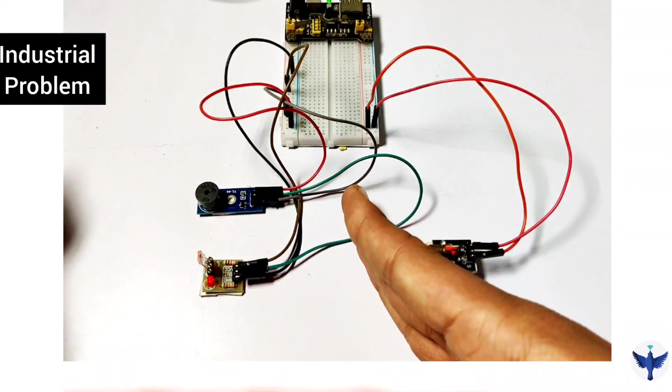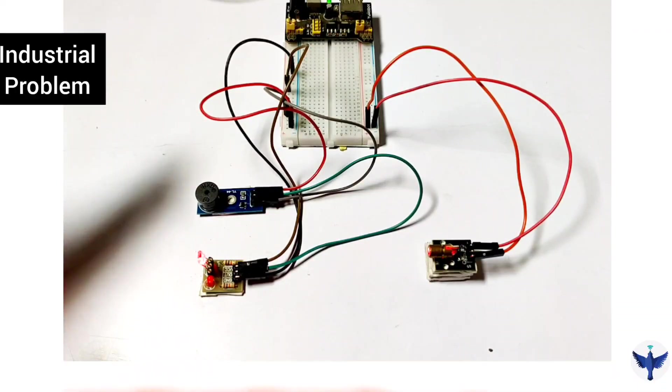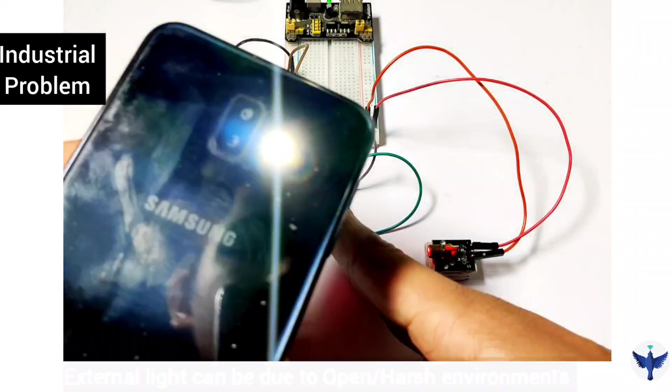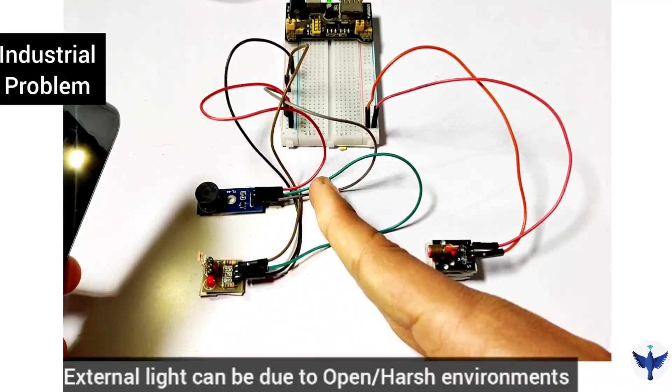We can see that the buzzer is going on. So now I will tell you a practical industrial problem that the sensors face. Suppose I have obstructed this and I have an external light source. I am using this phone and I direct this light source on the receiver.